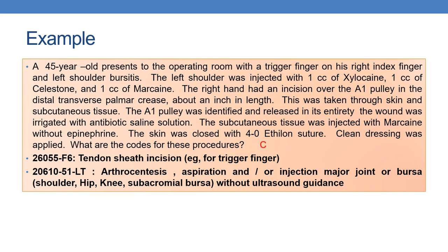Now let us discuss an example. A 45-year-old presents to the operating room with trigger finger on his right index finger, right hand second digit, and left shoulder bursitis. The left shoulder was injected with 1 cc of xylocaine, 1 cc of Celestone, and 1 cc of Marcaine. The right hand had an incision over the A1 pulley in the distal transverse palmar crease, about an inch in length, through skin and subcutaneous tissue. The A1 pulley was identified and released in its entirety. The wound was irrigated with antibiotic saline solution. Subcutaneous tissue was injected with Marcaine without epinephrine; skin was closed with 4-0 Ethylon suture. Clear dressing was applied.